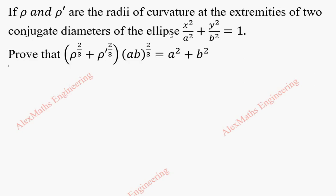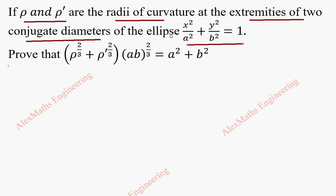Hi students, this is Alex here. In this problem, we have given rho and rho dash, the radius of curvature at the extremities of two conjugate diameters of the given ellipse x squared by a squared plus y squared by b squared equal to 1. And we have to prove this expression.